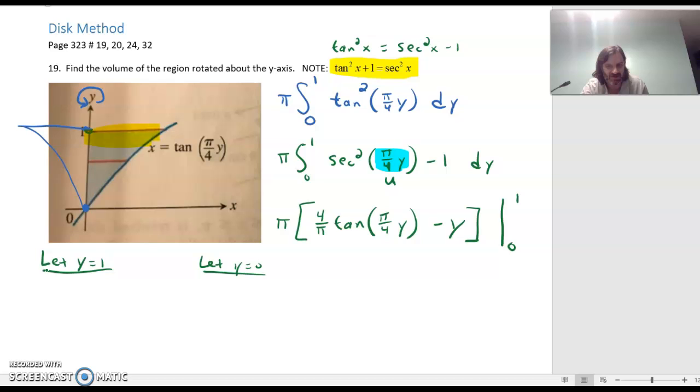When we let y equals 1, we will have pi times 4 over pi times the tangent of pi over 4 minus 1. Then we're going to subtract off the same thing but with the 0: pi times 4 over pi times tangent of 0 times pi over 4, which will be 0, and then minus 0.